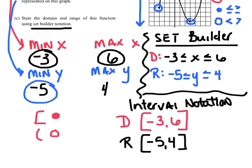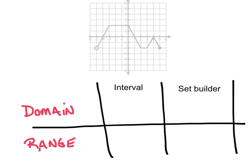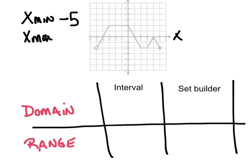We'll practice a few more. On our next graph, I'm going to state the x min and x max. Looking at the x-axis, the farthest point to the left has an x value of negative 5, and the farthest point to the right has an x value of positive 5. In interval notation: negative 5 comma 5. At negative 5 I see an open circle, so that's a parenthesis. At positive 5 I see a closed circle, so that's a bracket: (-5, 5].